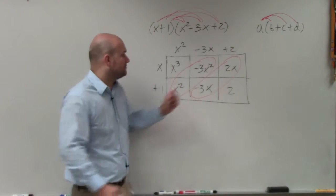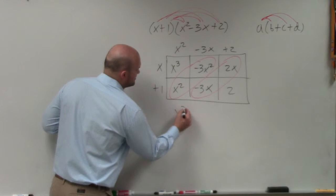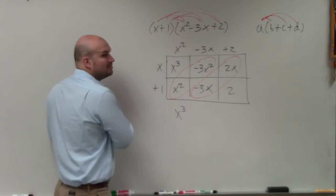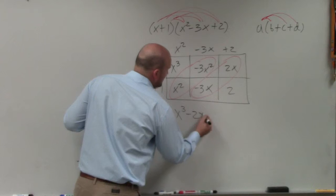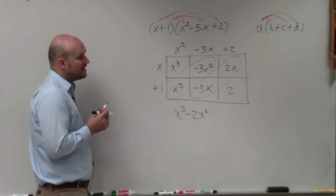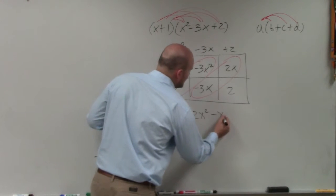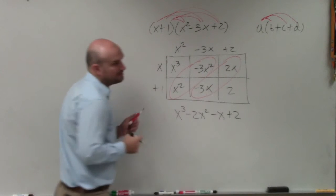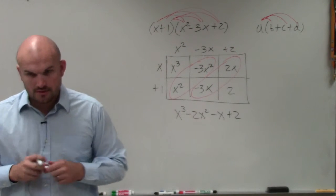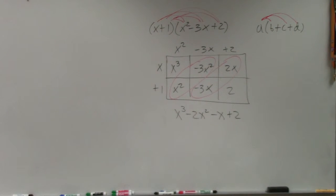So now I can just combine them. I don't have anything with the x cubed, so I just write out x cubed. x squared plus a negative 3x squared is a negative 2x squared. Negative 3x plus 2x is going to be again a negative x, and then plus 2. So the box method basically would be...